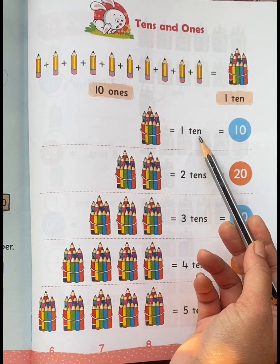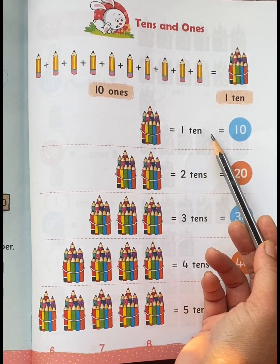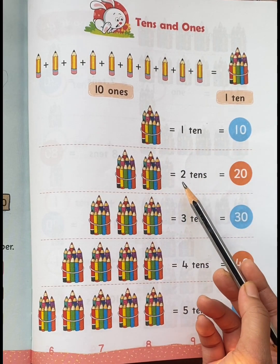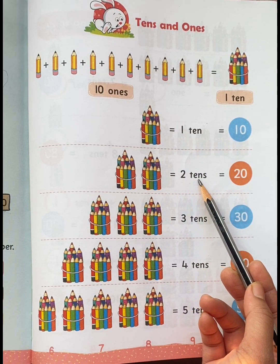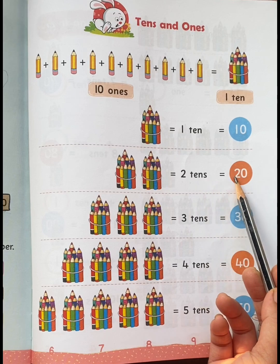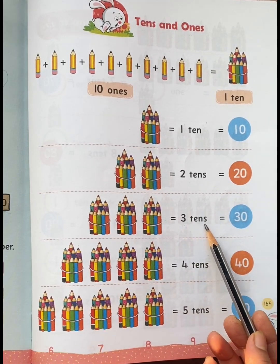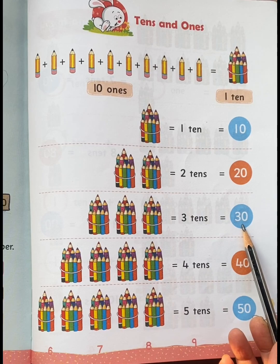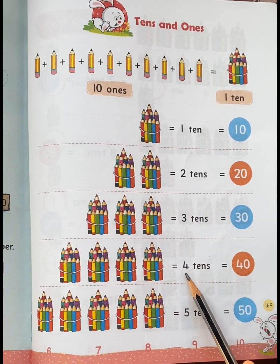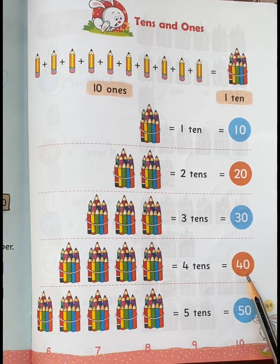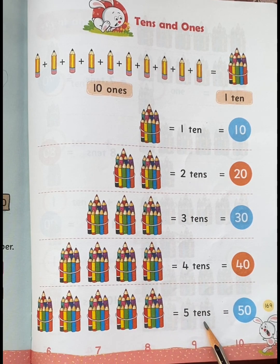One ten means ten color pencils. Two tens means twenty color pencils. Three tens means thirty color pencils. Four tens means forty color pencils. Five tens means fifty color pencils.